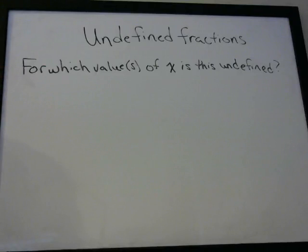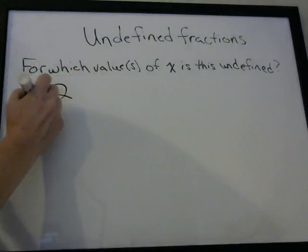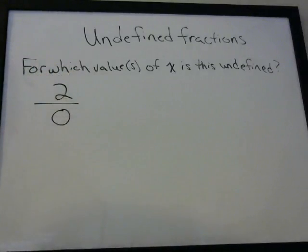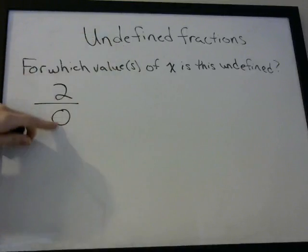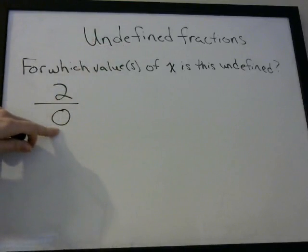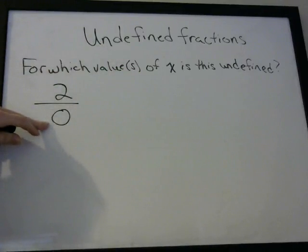The key to this question is to recognize that you cannot divide by zero. If you have a number other than zero on top, you can never have zero in the denominator. That's what it means by undefined — this fraction is undefined because zero is in the denominator. When you see 'undefined,' it means there's a zero in the denominator because you can't divide anything by zero.